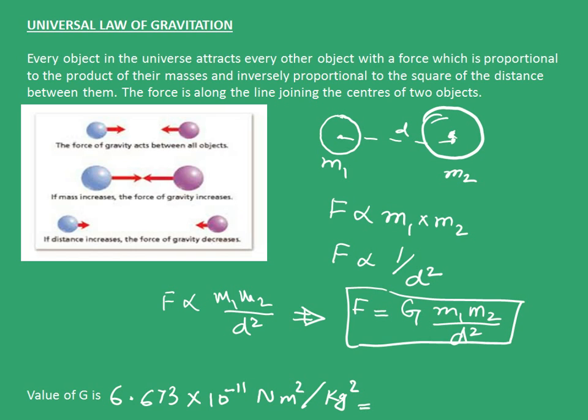Now, given the universal law of gravitation, this picture depicts how this force of gravitation will change as you change the parameters that is mass m1, m2 and distance d. If we increase the mass, the force of gravity increases. Similarly, if the distance is increased, the force of gravity decreases.